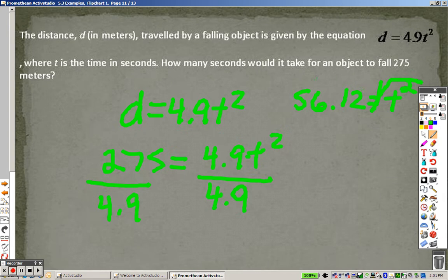To get t by itself, I would square root it. So the square root of 56.12, you get approximately plus or minus 7.5, we'll just say roughly. And t is in terms of seconds, so roughly 7.5 seconds is how long it would take for the object to fall.